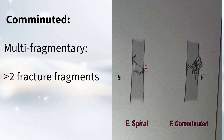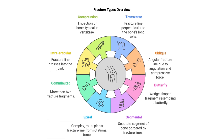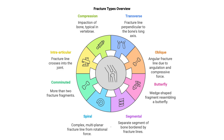Then there are intraarticular fractures, which extend to the joint itself. Compression fractures, where the bone is squished — you often see those in vertebrae. A couple that are more common in kids: torus fractures, which are a buckling of the outer layer of bone, and greenstick fractures, where the bone bends but doesn't completely break all the way through. And then pathologic fractures, which happen through bone that's already weakened by some other condition, like a tumor.